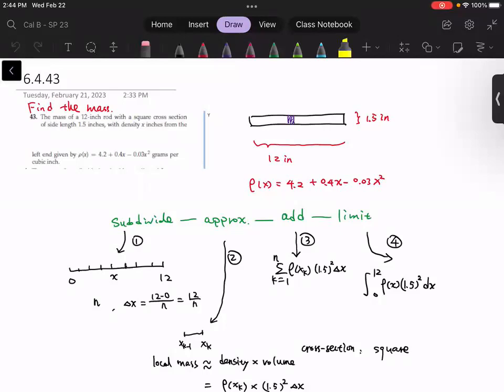This is a 12-inch rod. The cross section is a square. We know the length is 1.5 inch. The density function ρ depends on the x variable.